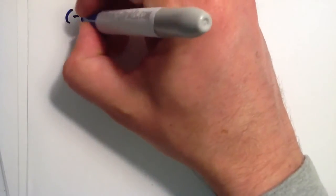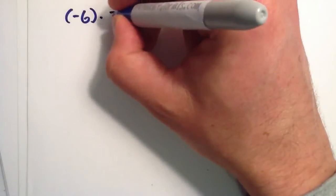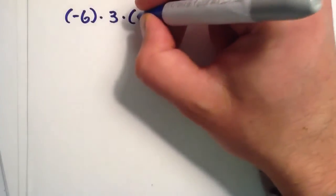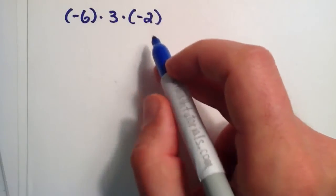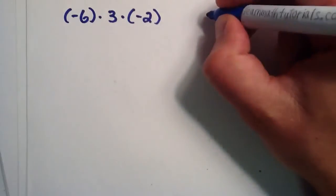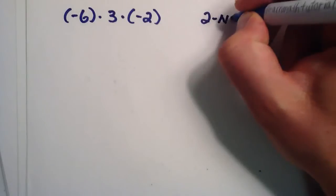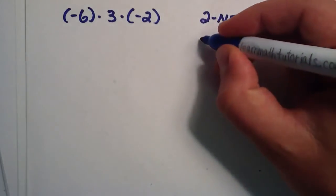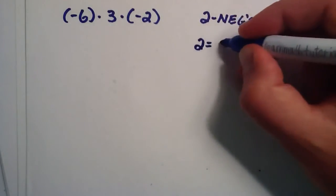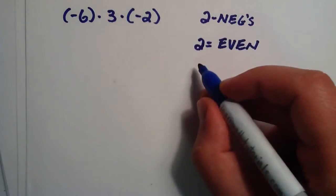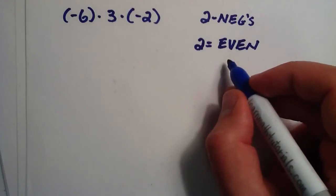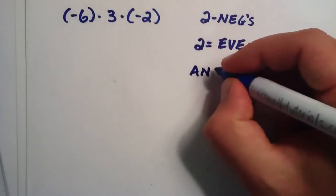Let's say that we have negative 6 multiplied by a positive 3 multiplied by a negative 2. We count the number of negatives in our product, and we have 1, 2 negatives. And the number of negatives that we have is an even number, and because the number of negatives we have is even, that implies that our answer will be positive.